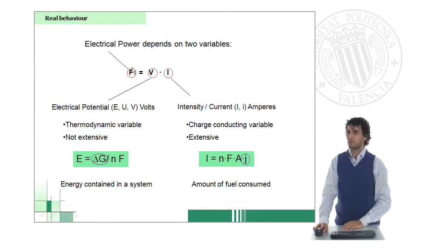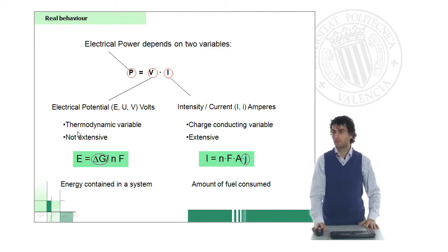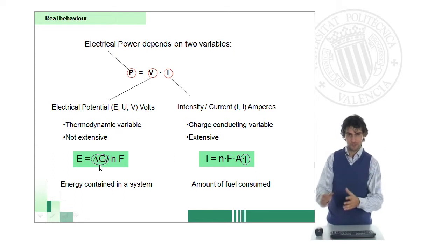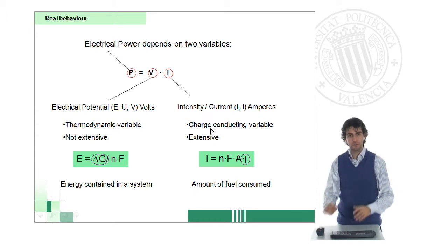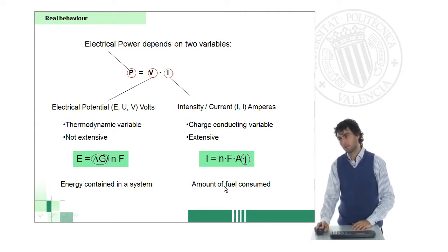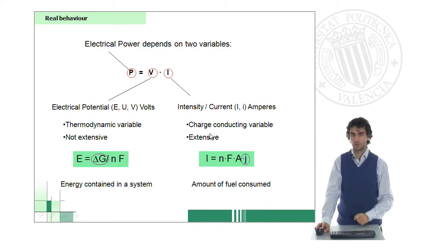As you may know, electrical power will depend on two main variables: electrical voltage or potential, and intensity, which is the current density. The voltage will depend on thermodynamic variables - the energy that a system contains - while intensity will depend on the amount of charge flowing through our system, which means we will be depending on the amount of fuel that we consume. So voltage is a non-extensive variable, while intensity is an extensive variable.